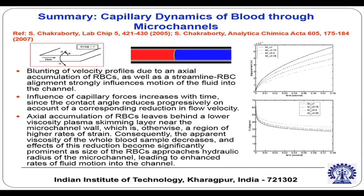Blunting of velocity profiles due to axial accumulation of red blood cells as well as streamline RBC alignment strongly influences the motion of fluid into the channel. This has something to do with the lift force that blood cells experience — as you reduce the diameter of the channel, this force becomes more and more important.